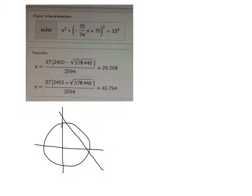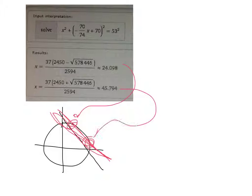I'm going to use a different ink. There's a point there and a point there. That would represent when x equals 24 point something and when x equals 45 point something. We have to find the y values. The easiest way to do this would be to use the line: y = -70/74x + 70.